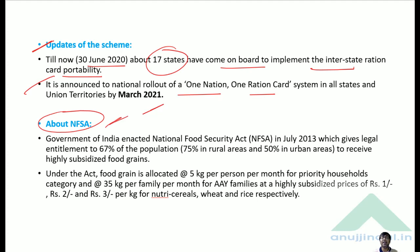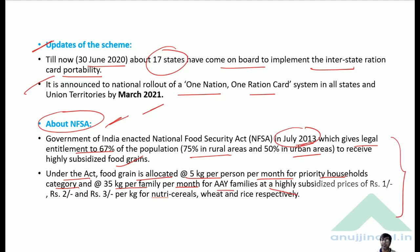The National Food Security Act was enacted in the month of July 2013. It gives legal entitlement to 67% of the population — 75% in rural areas and 50% in urban areas — to receive highly subsidized food grains. Under this act, food grain is allocated at 5 kg per person per month for priority households, and at 35 kg per family per month for AAY families, at highly subsidized prices of Rs. 1, Rs. 2, and Rs. 3 per kg for coarse cereals, wheat, and rice respectively.